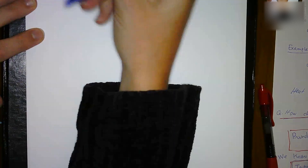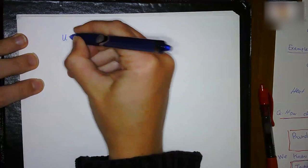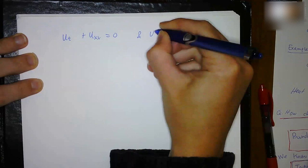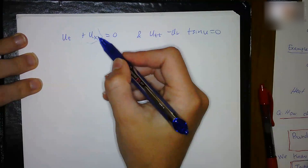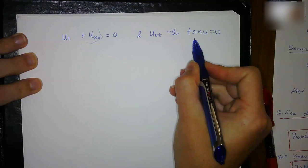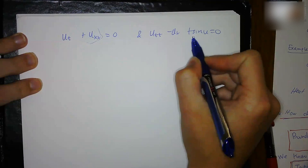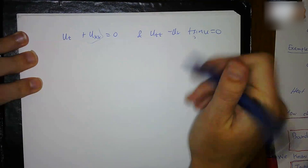We're going to look at another example from the book involving second order equations. Consider u_t + u_xx equals 0, and u_tt minus u_x plus sin(u) equals 0. The first equation has a product of order 2, making it non-linear, and the second is also non-linear because sine is a non-linear function. So these two are both non-linear cases.